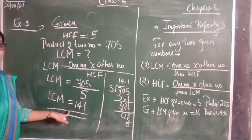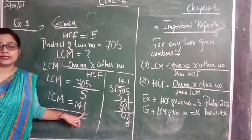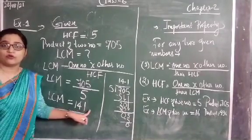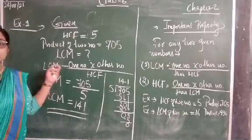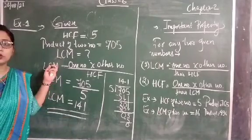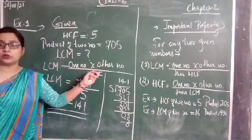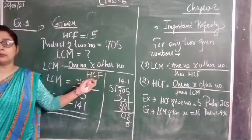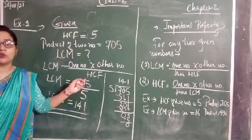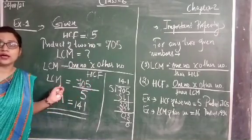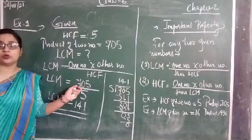When we divide 705 by 5, we get 141. This 141 is the LCM, and our answer is 141. So by using this formula — LCM equals one number into other number divided by their HCF — we can find out the LCM.